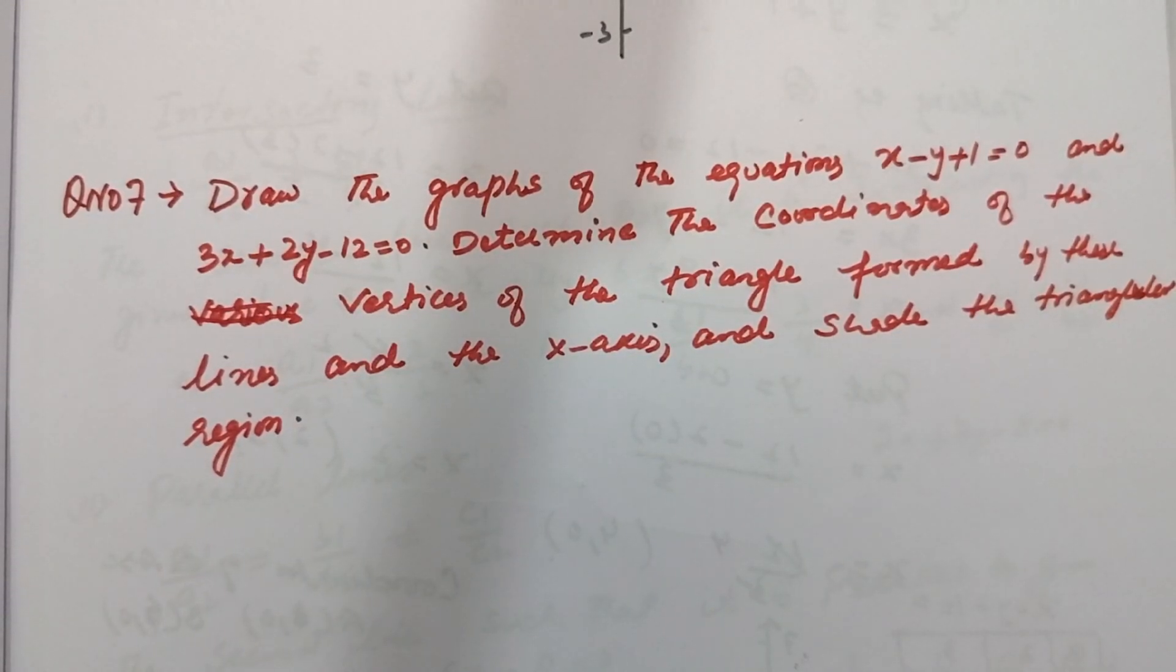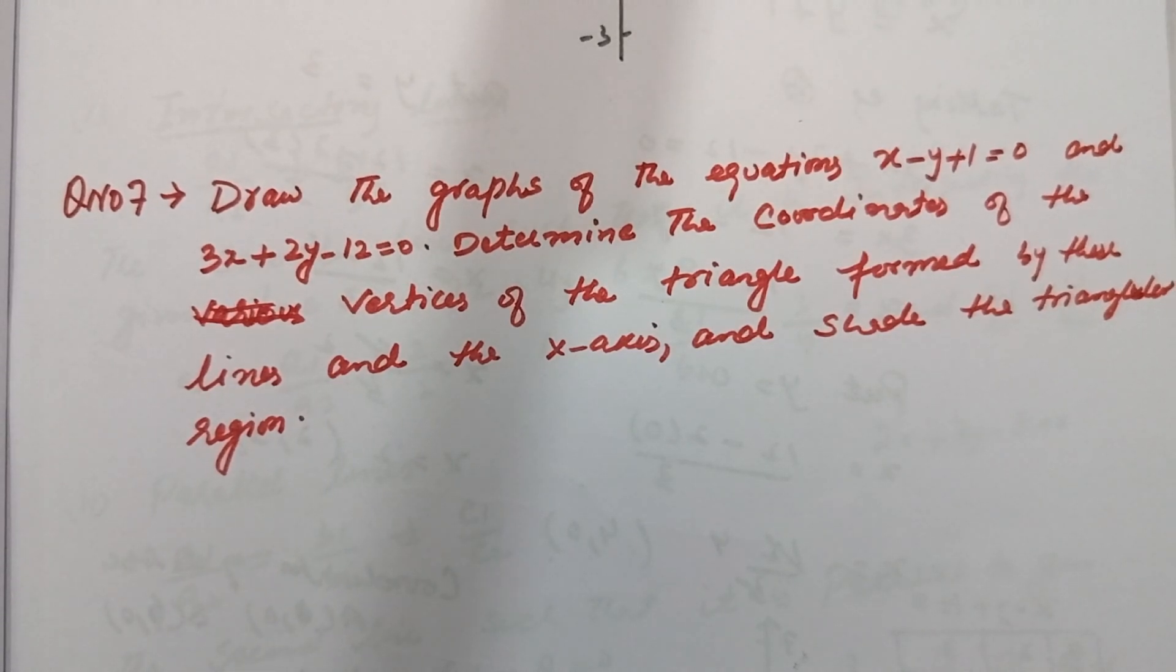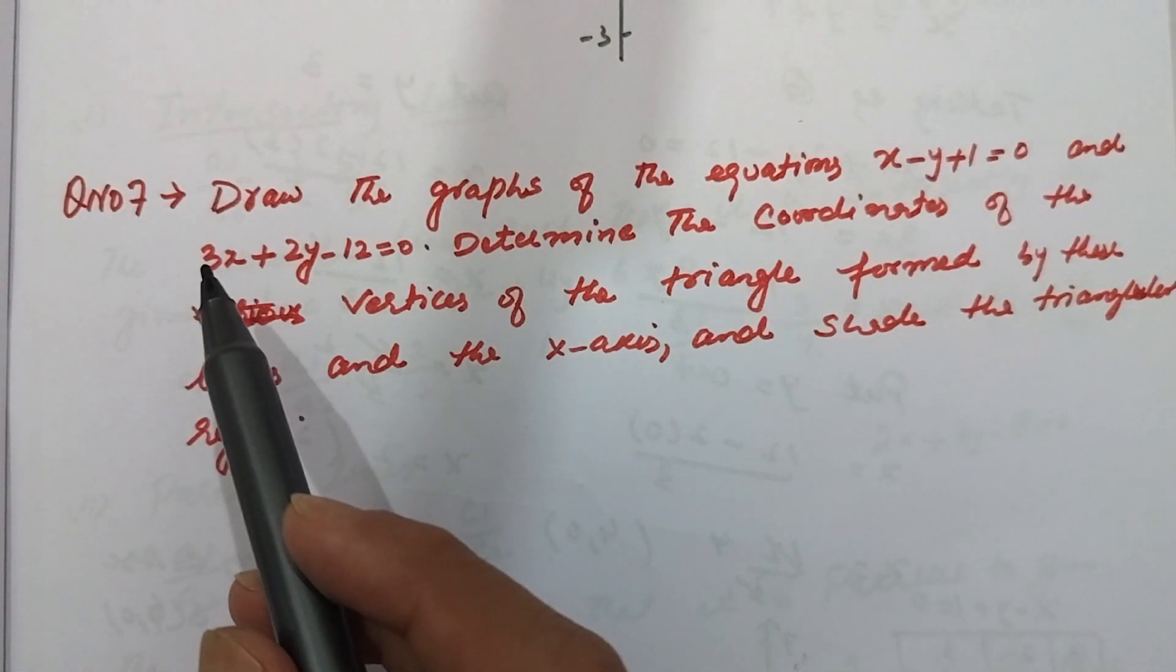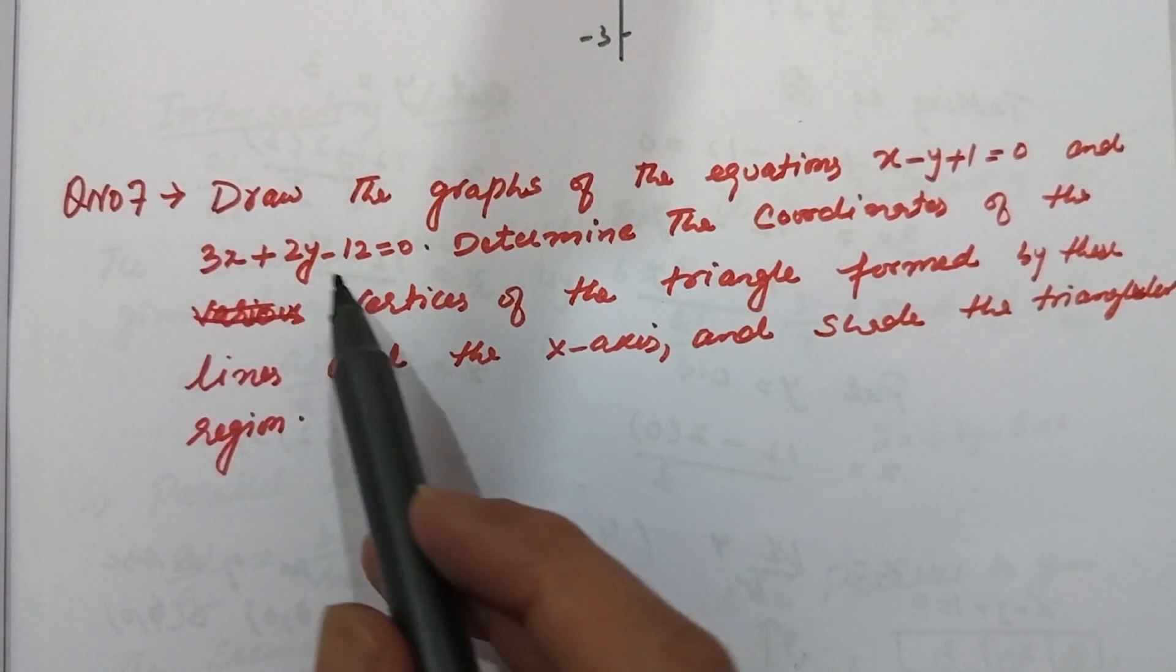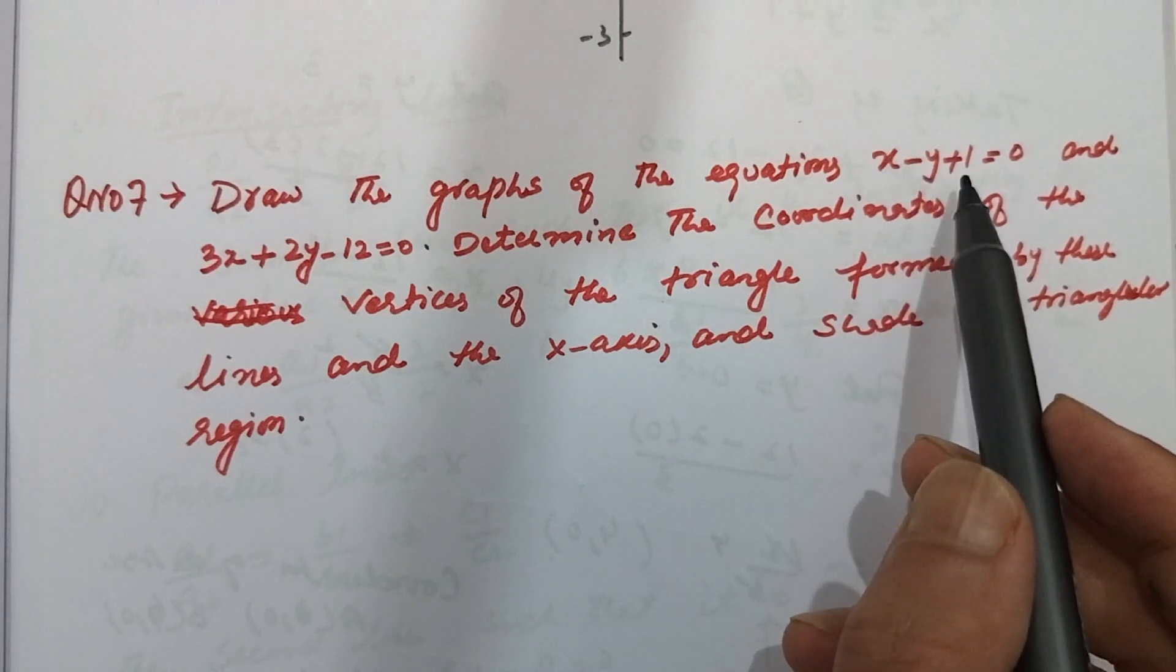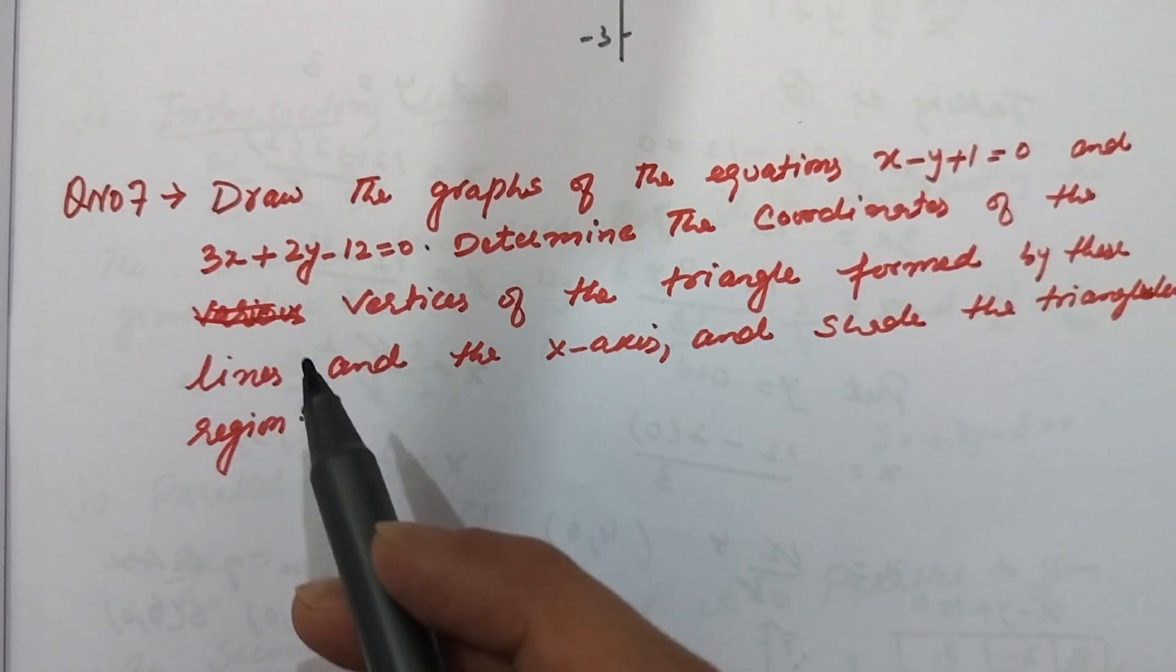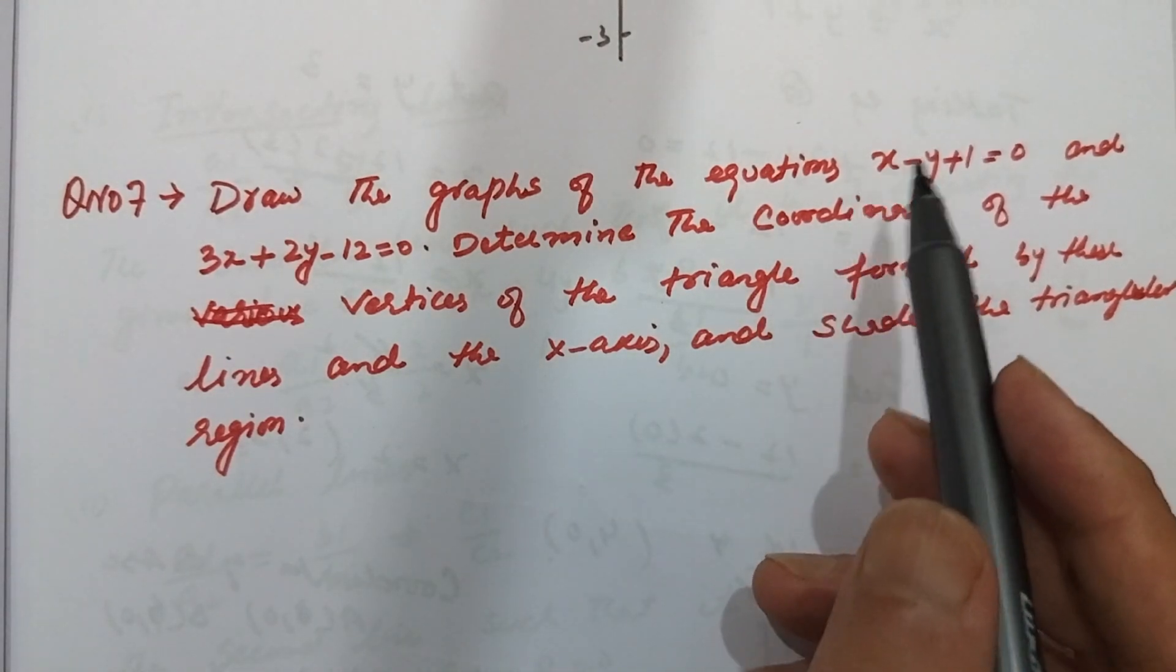Hello my dear students, I am solving question number 7 from class 10th exercise 3.1 on the topic of a pair of linear equations in two variables. The question asks us to draw the graphs of the equations x minus y plus 1 equal to 0 and 3x plus 2y minus 12 equal to 0.